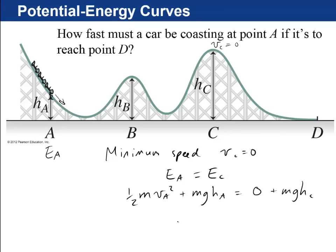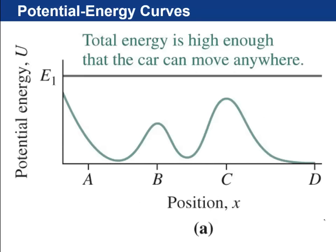And you can solve that for v_A = √(2g(h_C - h_A)). That's going to be the minimum speed.